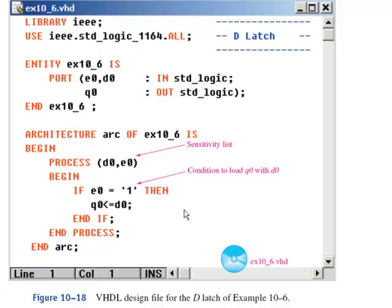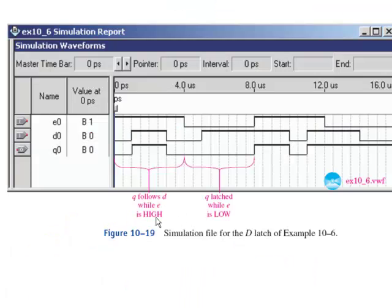Now we want to do a simulation. Here's the simulation file in figure 10-19. By the way, these are already created for you on the companion website. I'm going to list the E, and I've arbitrarily made a waveform that goes for 4 microseconds high and 4 microseconds low. And then the D, I have a couple lows and a couple highs, just so we can exercise the functions.